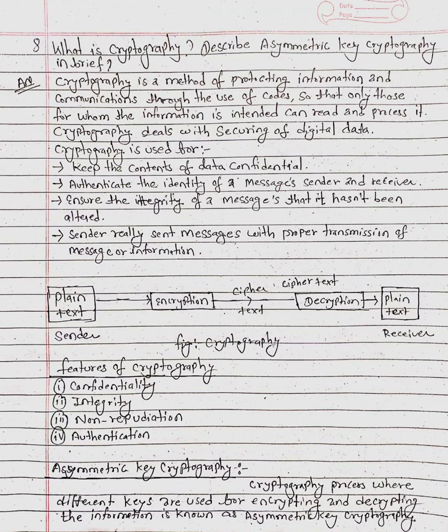What is cryptography? Cryptography is the method of protecting information and communications through the use of codes, so that only those for whom the information is intended can read and process it. Cryptography deals with securing of digital data. It is used to keep the contents of data confidential and to authenticate the identity of message senders and receivers.